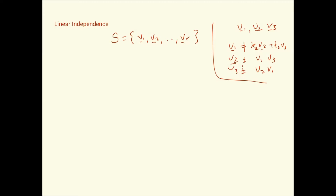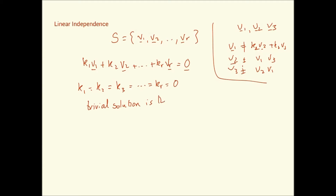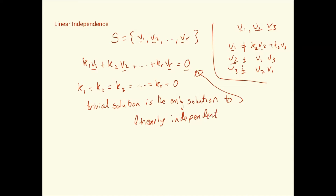How do we test for linear independence? There's a very simple way: we set up the equation k1·v1 + k2·v2 + ... + kr·vr = 0 vector. If the only solution to this equation is the trivial solution k1 = k2 = ... = kr = 0, we say that the set S is a linearly independent set.